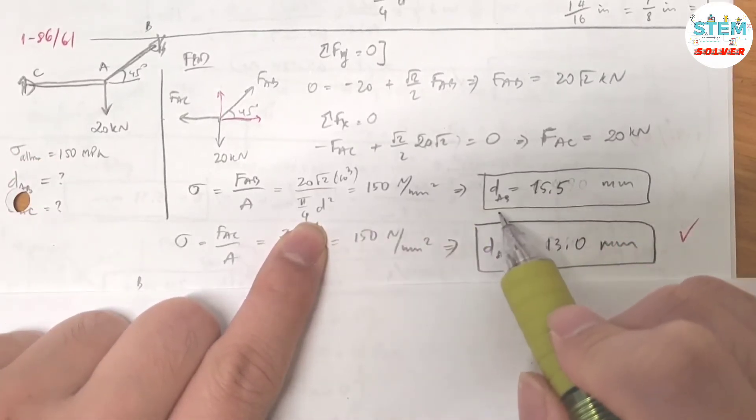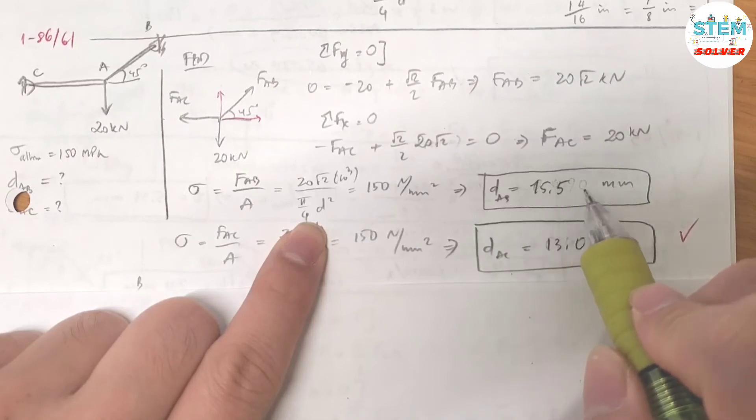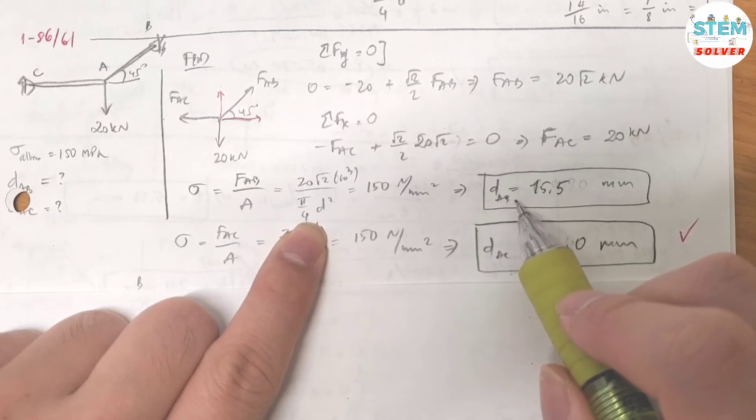So for d, I got dab equals 15.5 mm. That is the diameter for cable ab.